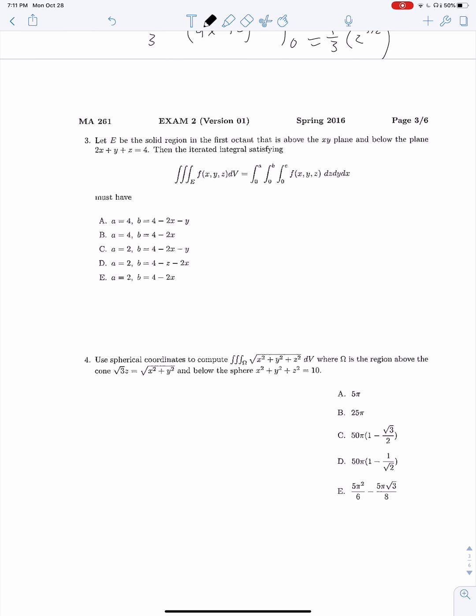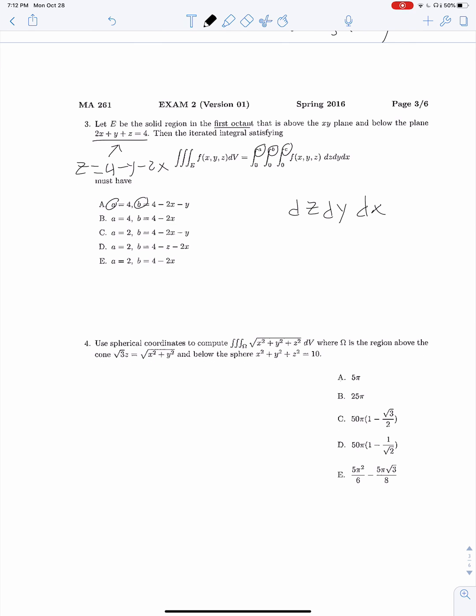Question 3. Let e be the solid region in the first octant below the xy plane and below this plane. We need a rectangular integral that satisfies all these requirements. The order is dz dy dx. We know that our upper bounds should be the solutions. In the case of z, it should be z equals something equal to this function, so z equals 4 minus y minus 2x.